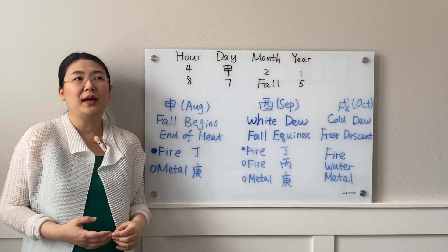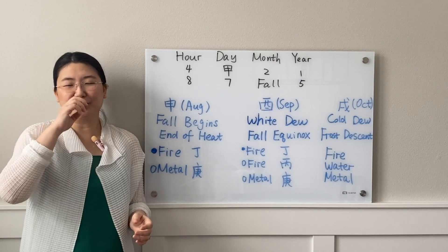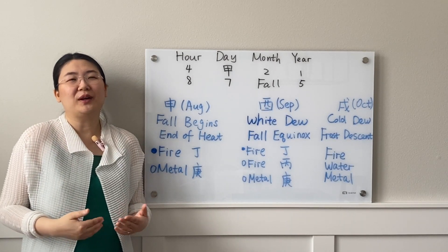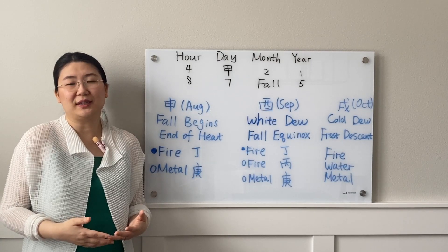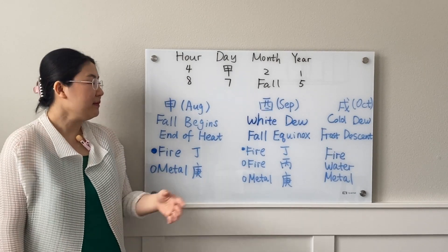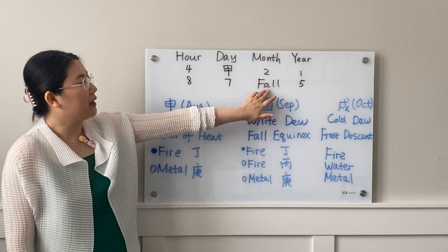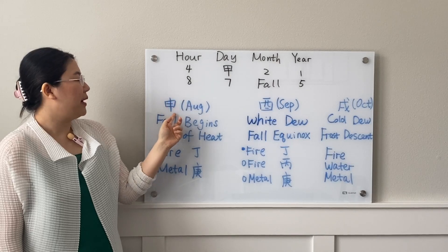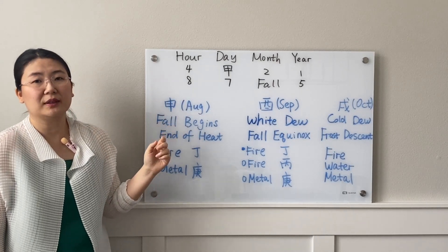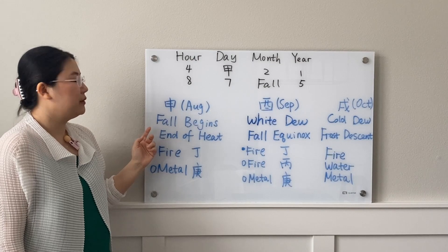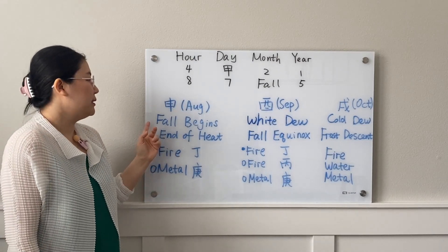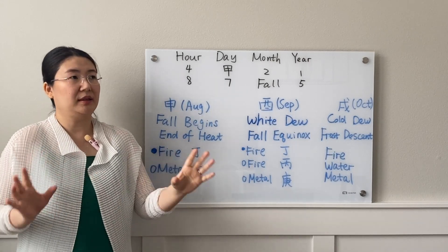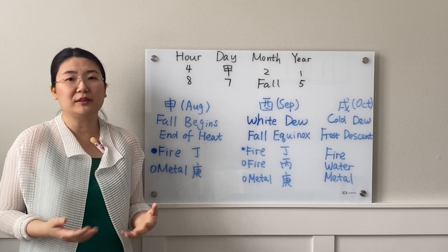Compared to the spring-born Yang Wood who are relatively stubborn, the fall-born Yang Wood are more likely to listen to people's advice and suggestions. Looking back at your chart, if your position number six looks like 'Shen,' that's about August in our solar calendar. Shen consists of two solar terms: the beginning of fall and the end of heat, which paints the environmental climate this tree lives in.